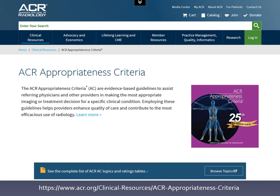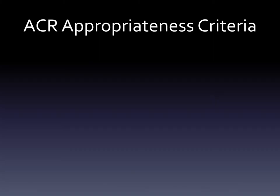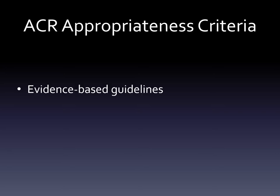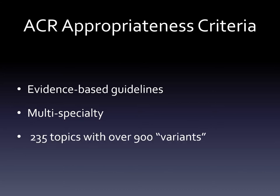I've discussed this in prior modules, but this module's purpose is to go over it in more detail. The appropriateness criteria from the American College of Radiology is based on evidence — as much evidence as is available for any given topic. Whenever possible, other specialties provided input into the guidelines. Currently, the appropriateness criteria has hundreds of topics, and within each topic there are multiple variants as well.